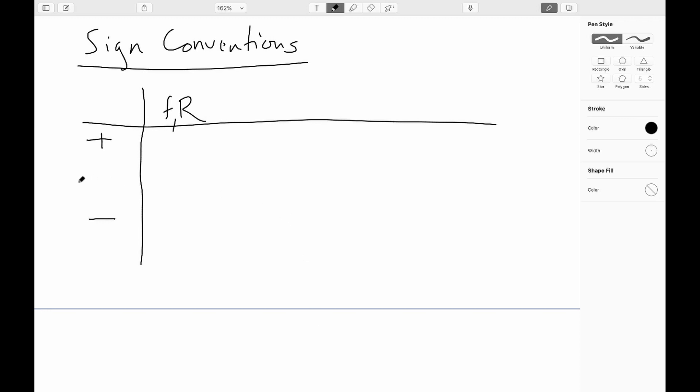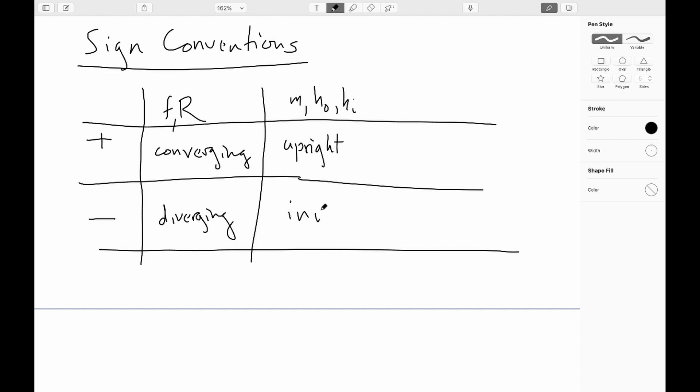And the focal length and radius are negative if they're diverging. For lateral magnification and also our object and image height, if the thing is upright, it's positive. If it's inverted, it's negative.